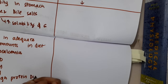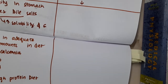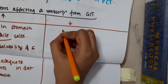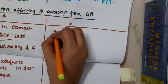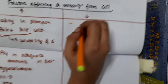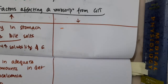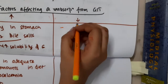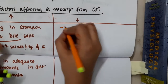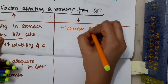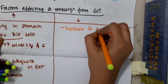Eighth, high protein diet — these will increase calcium reabsorption. Now, what will decrease calcium reabsorption? Calcium reabsorption is decreased by the following factors. First, if there are any insoluble calcium soaps formed.